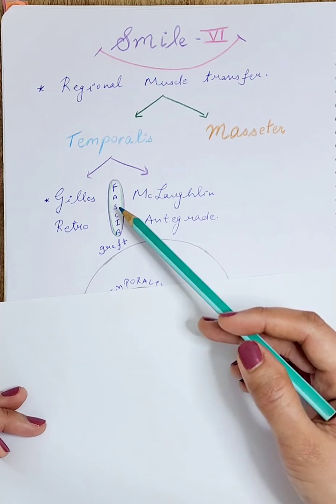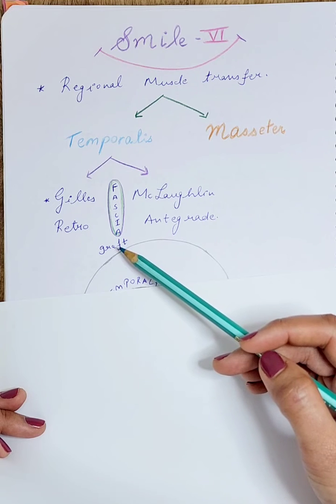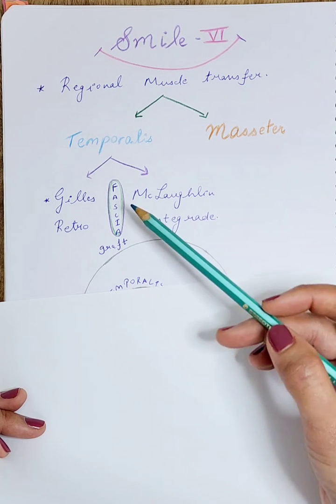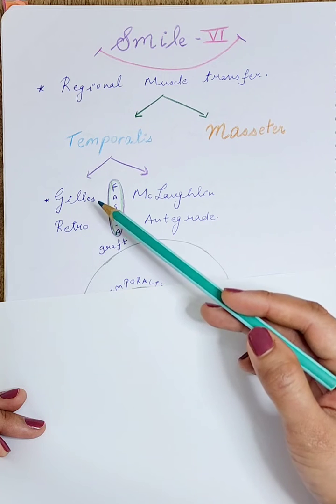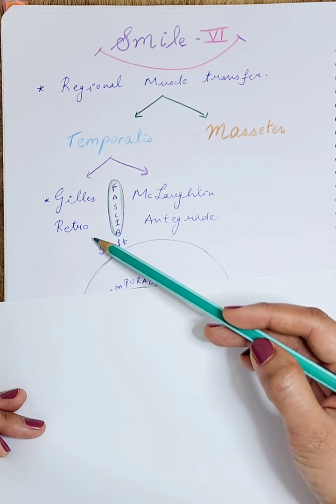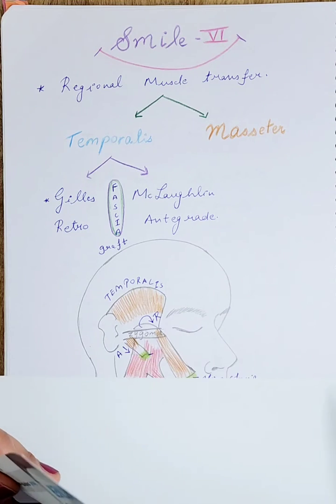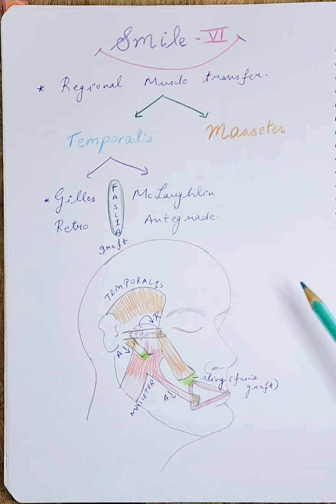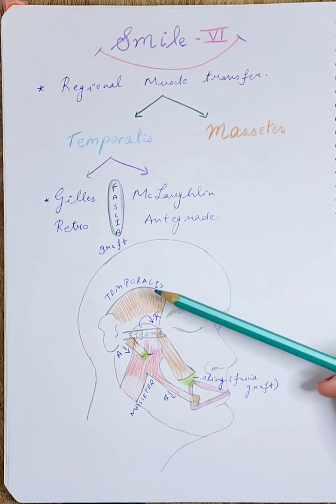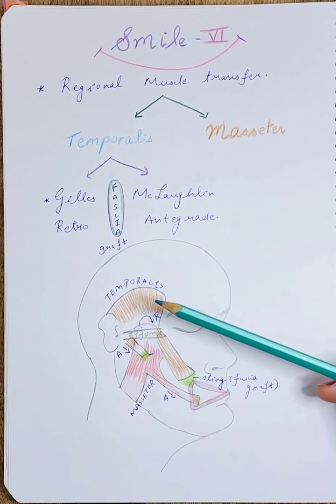the help of a fascia lata graft or any other sling. There are two ways of transfer: one is a Gillies retrograde transfer and one is a McLaughlin anterograde transfer. Here you can see a depiction of the muscle transfer. This is the temporalis muscle which is found at the temporal fossa.